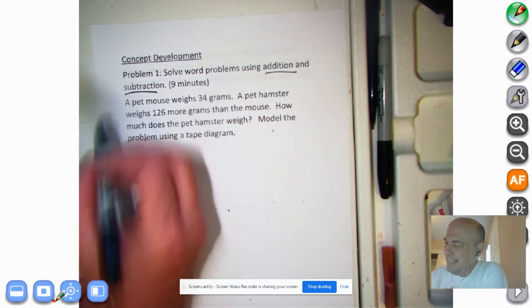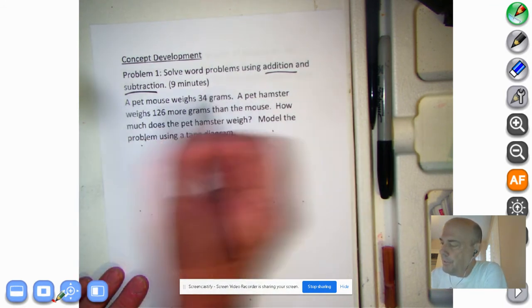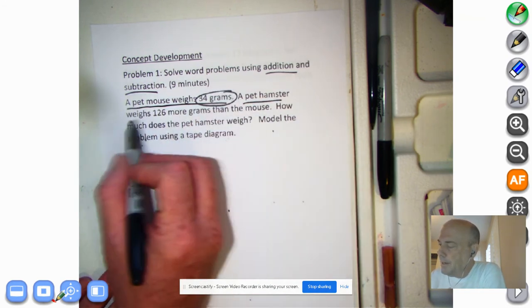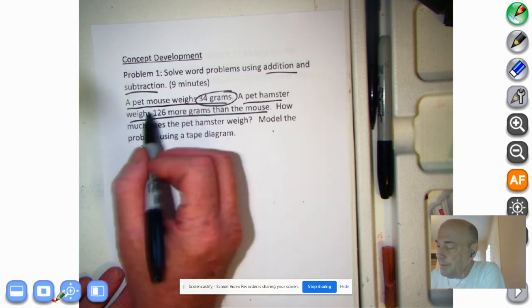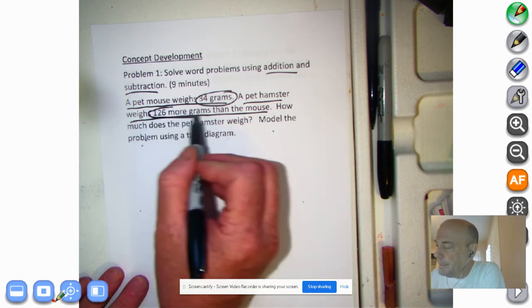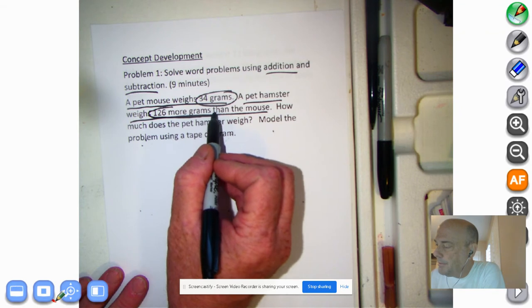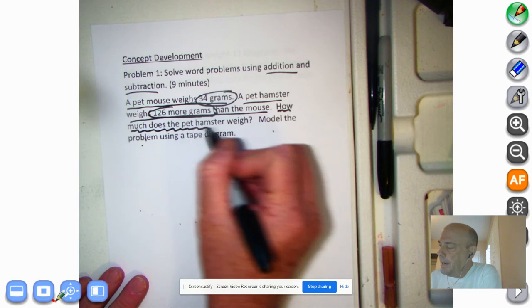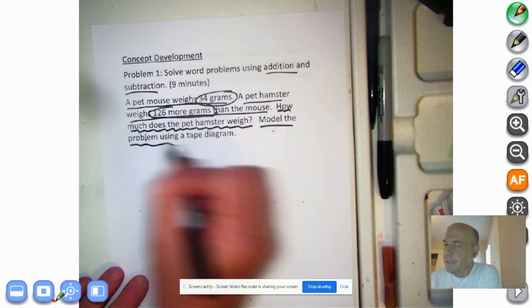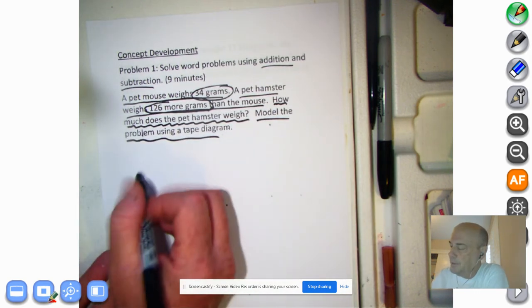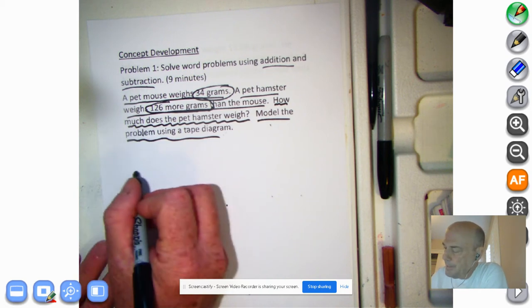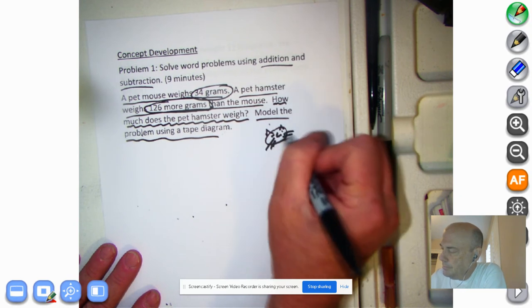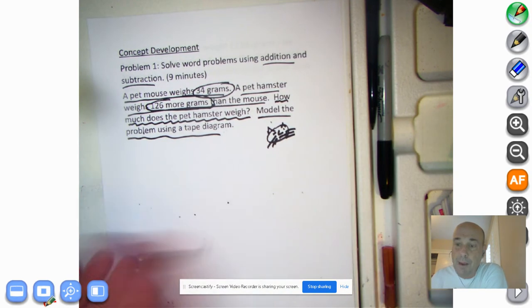Let's read our first problem. A pet mouse weighs 34 grams. That is something we do know. A pet hamster weighs 126 more grams than the mouse. So it doesn't weigh 126 grams, it weighs 126 grams more. I forgot to put more in there than the mouse. So what we got to find out is how much does the pet hamster weigh and we're going to model this problem using a tape diagram. We don't do too many tape diagrams yet, but let's go ahead and introduce this. So you are copycats.